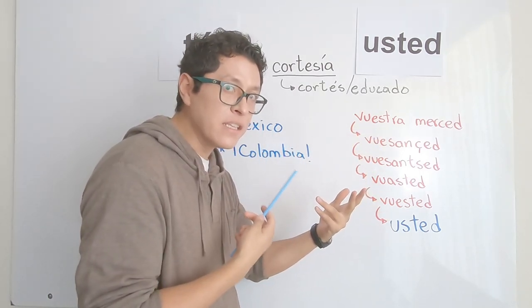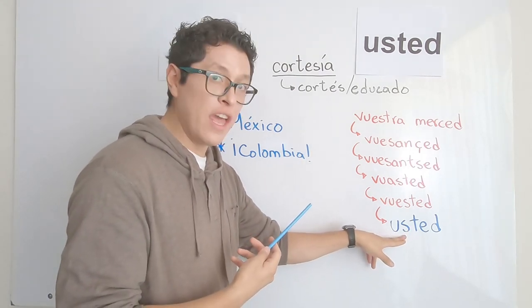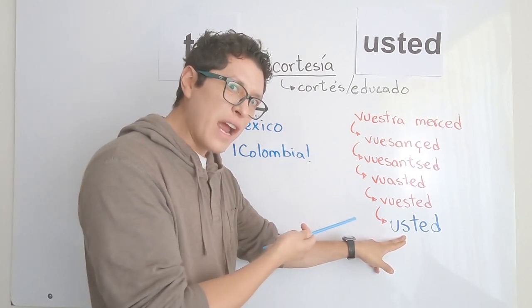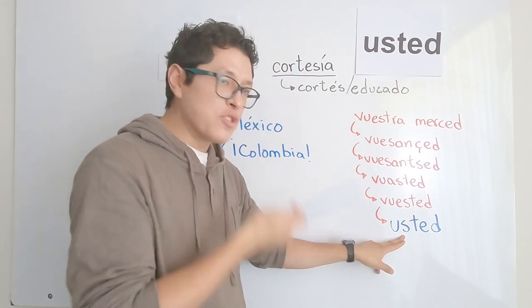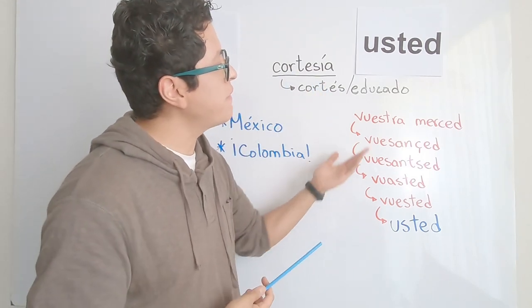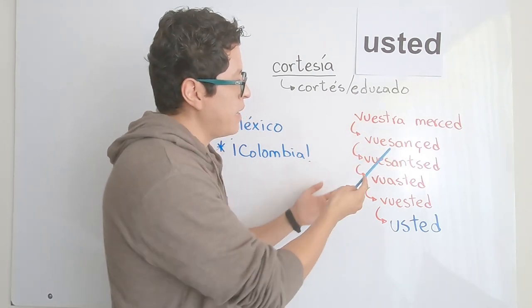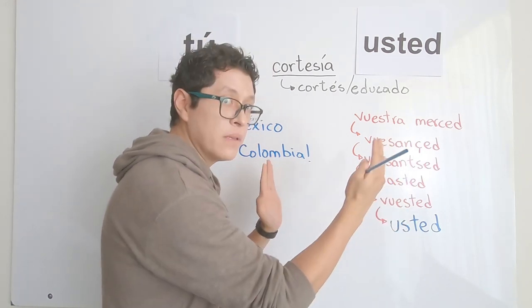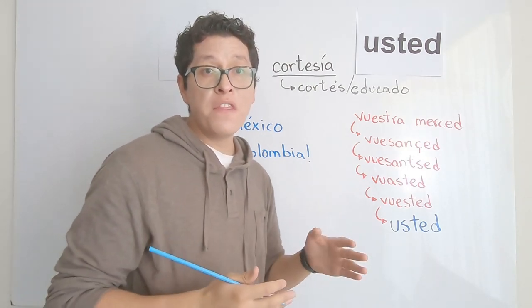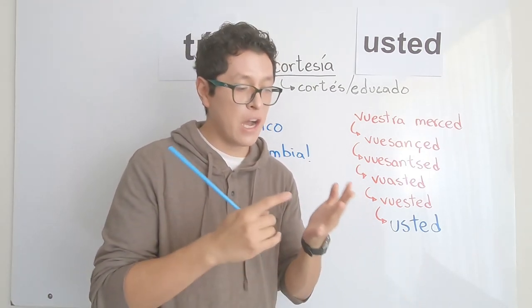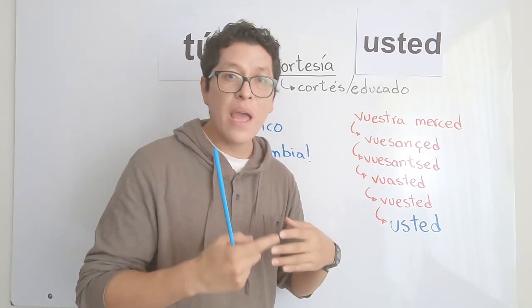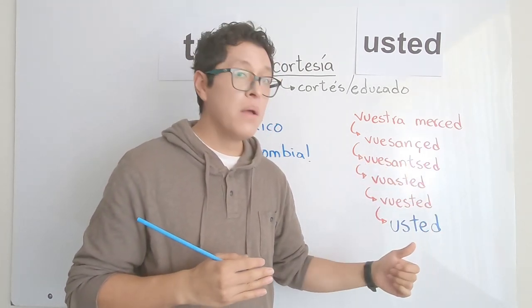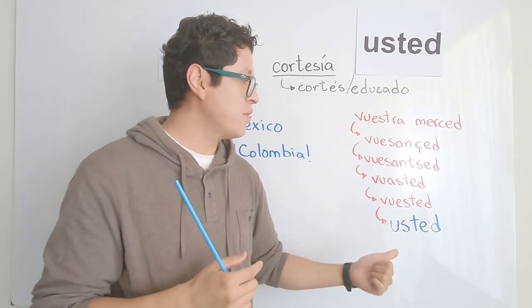It's very hard to track exactly when people started using usted since it's an oral evolution. Scholars have found that it evolved like this: from vuestra merced, it became vuestancet, then vuested, and finally usted as people made it shorter. This is similar to English contractions like gonna, wanna, kinda — maybe in a couple hundred years those will be standard too.